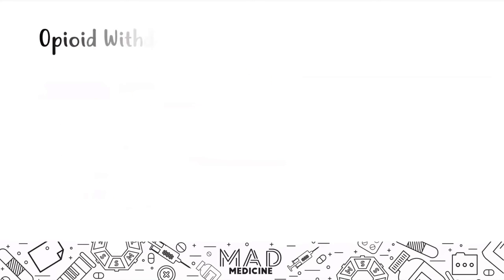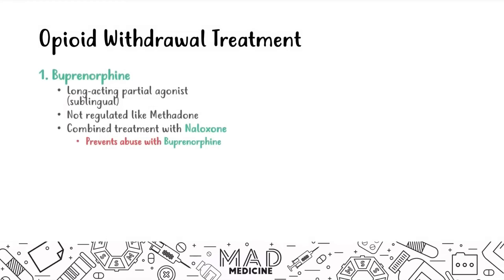For withdrawal treatment, there are several drugs to know. The first is buprenorphine, a long-acting partial agonist. It's not as regulated as methadone, but it is usually combined with naloxone to prevent abuse — since buprenorphine is an agonist, naloxone (the short-acting antagonist) helps prevent misuse.